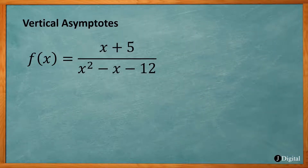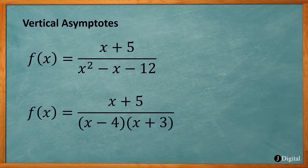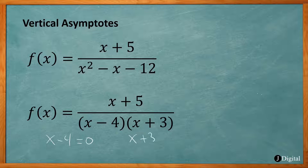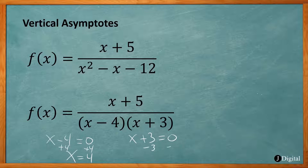If we look at this function, f(x) = (x + 5) / (x² - x - 12), you want to factor the denominator. Factoring gives us (x - 4)(x + 3). Setting each factor equal to 0: x - 4 = 0 gives x = 4, and x + 3 = 0 gives x = -3.